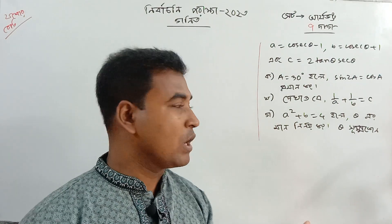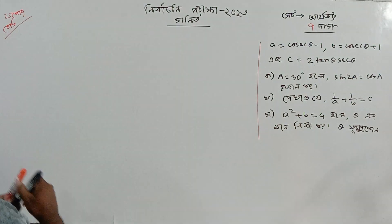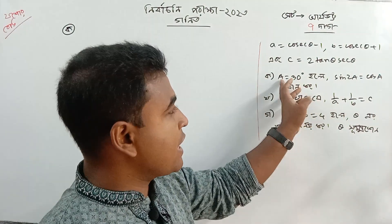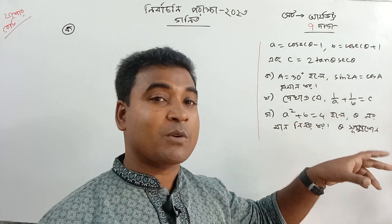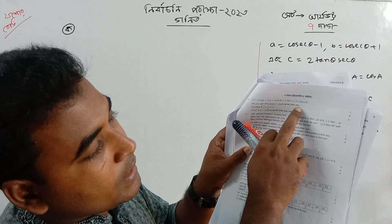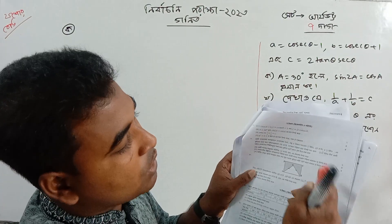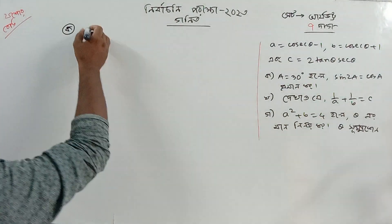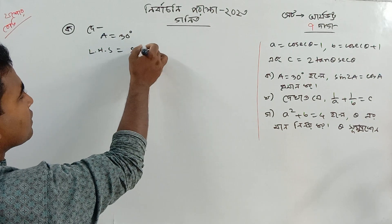So if you want to write A squared plus B equal to 4, then you will write A squared plus B equal to 4. If you want to write A squared plus B equal to 4, then you will write A squared plus B equal to 3d sin 2a equal to cot a.